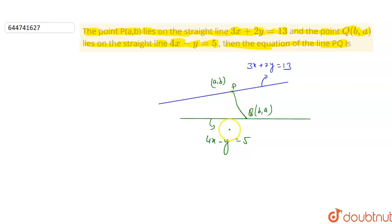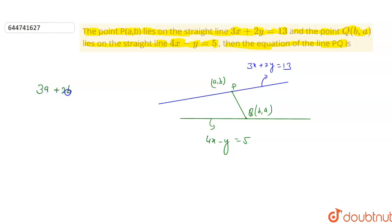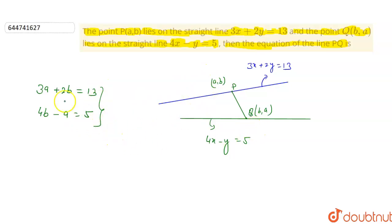Now, if the point P lies on the first line, then this coordinate will satisfy that equation. So substituting P(a,b) gives us 3a + 2b = 13. And substituting Q(b,a) into the second equation gives us 4b - a = 5.